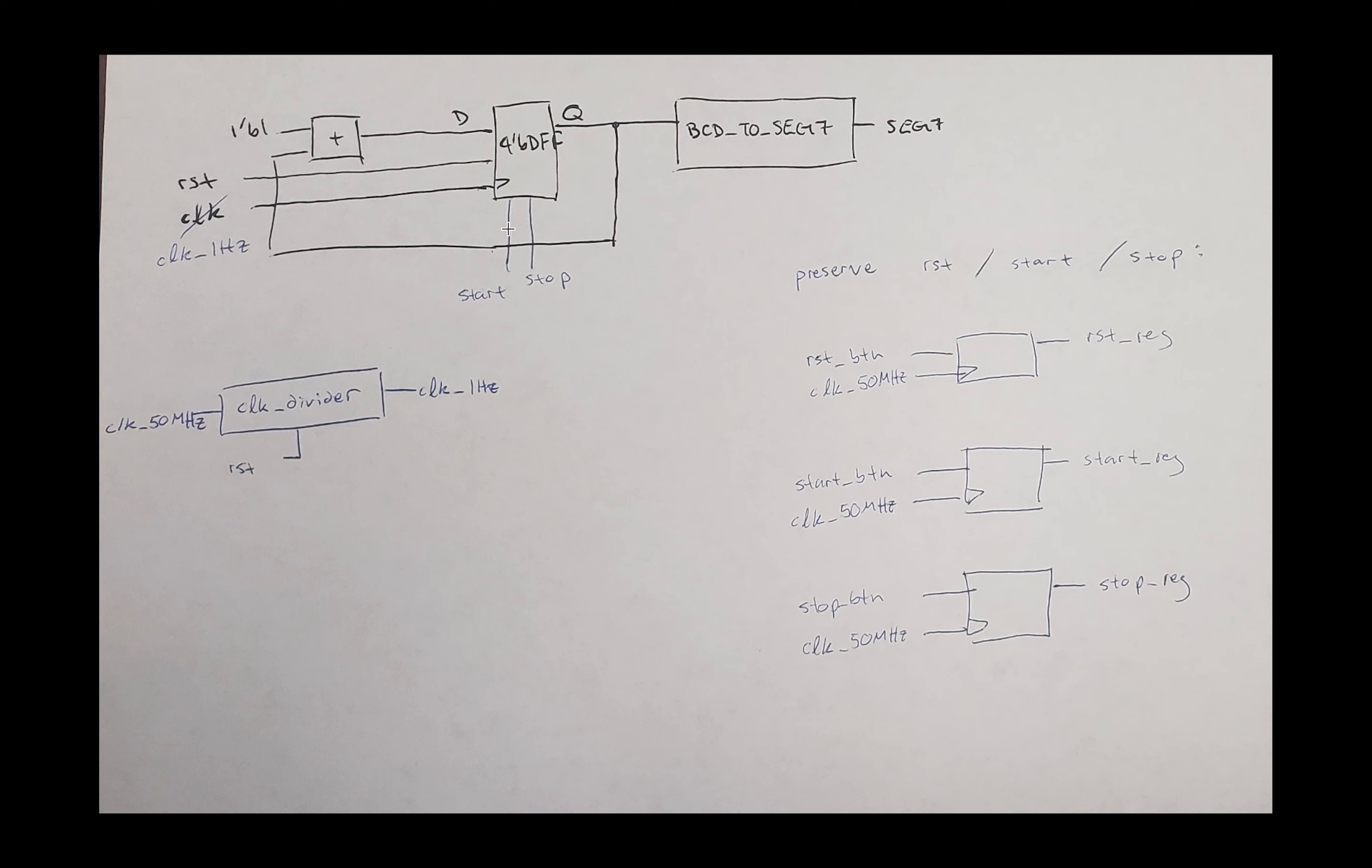So if my start is 1, on the next clock cycle, I need to start counting. Or if my stop is 1, on the next passage of clock, I need to stop counting. So basically there is a dependency for my start and stop on my clock. So that's why they are hooked to my D flip-flop.